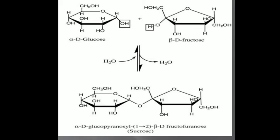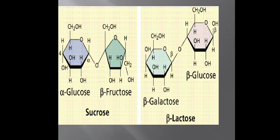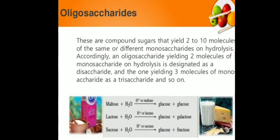Next we will see about oligosaccharides. Considering the units: a single unit of sugar is known as a monosaccharide. If two units of sugar join each other with the help of a glycosidic bond, it is known as a disaccharide.